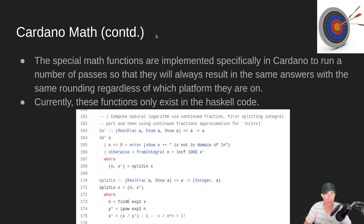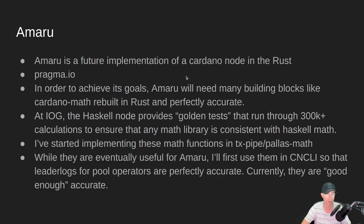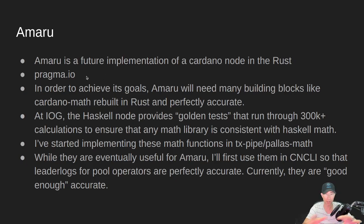Essentially, these Cardano math functions allow the program to calculate down to a certain accuracy, then exit out, always using the exact same values for rounding. Any program that implements these algorithms can then get the same answers as the Cardano Haskell node. Currently, these functions only exist in the Haskell node. That brings us to Amaru — a future implementation of a Cardano node using the Rust language. Rust is known to be very secure, reliable, and fast, though it's not quite as easy to implement things in a scientific way, which is where the Haskell node shines.